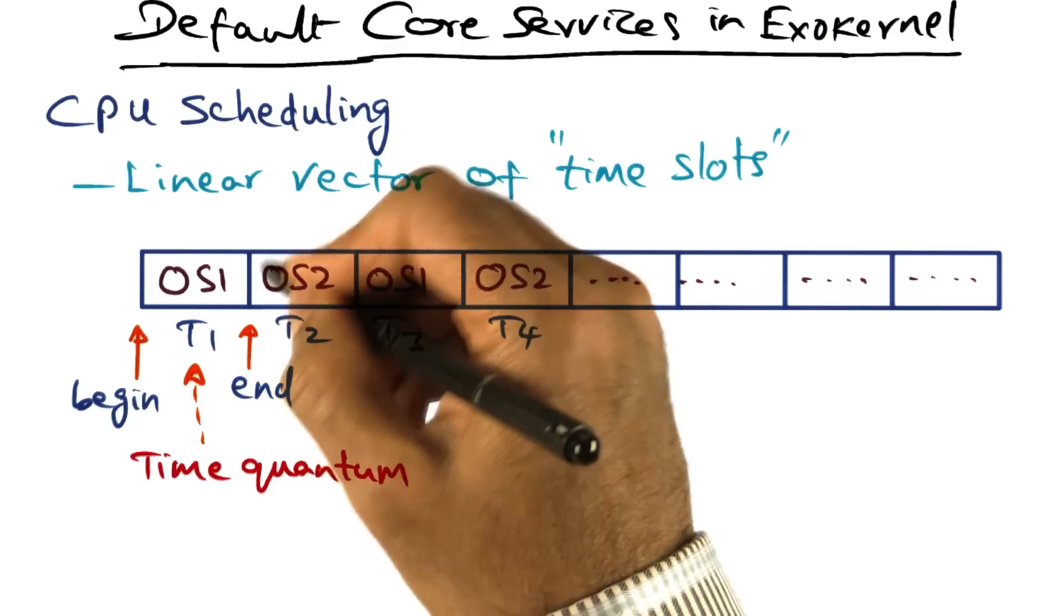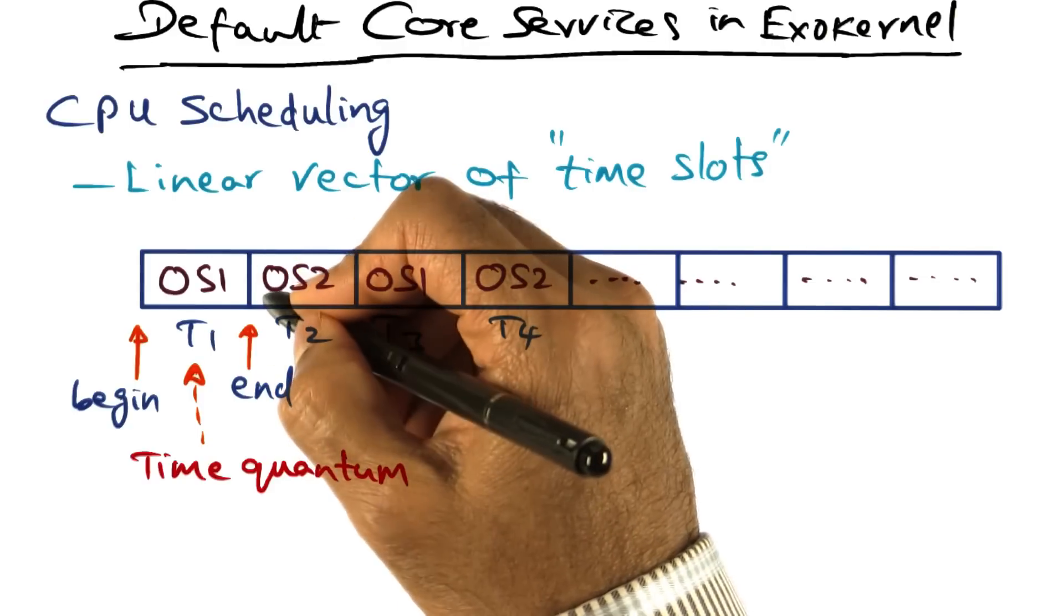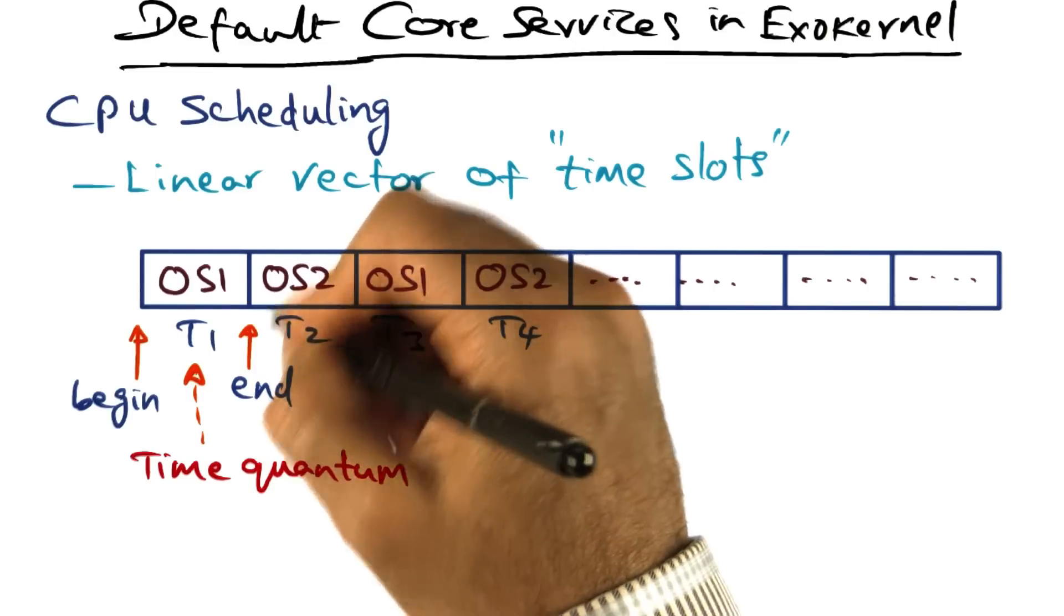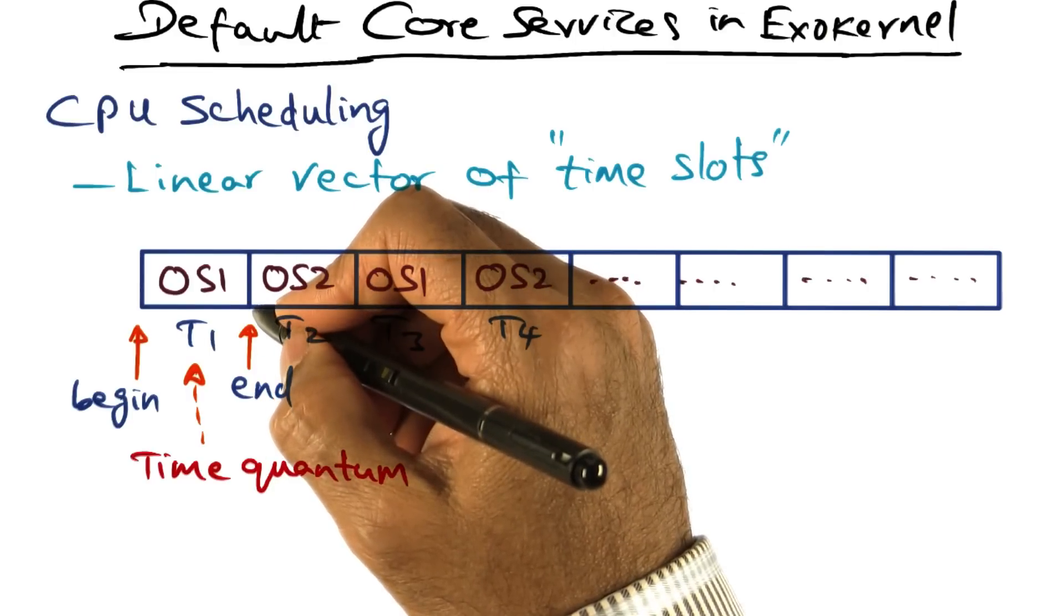The time that is allowed for a library operating system to do the saving and restoring of context at the point of a context switch is bounded.